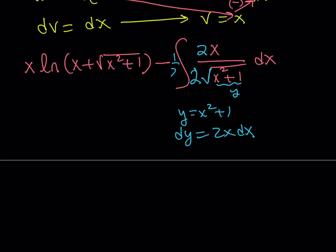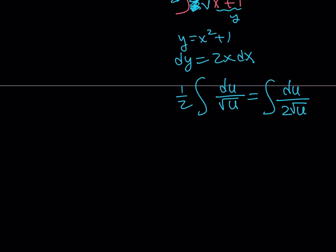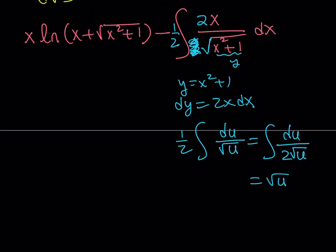I can put the one-half out front and get rid of it. What we have then is the integral equal to one-half of dy over the square root of y. The integral of dy over 2 times the square root of y, as you will remember, is just the square root of y plus c. So this integral is just going to give you the square root of x squared plus 1.